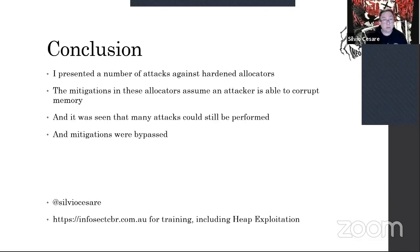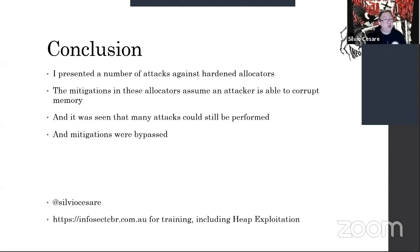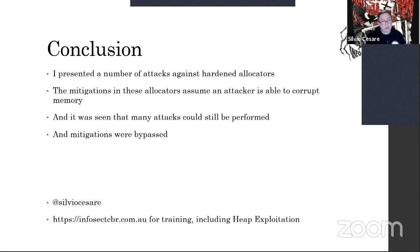In summary, I've presented a number of attacks against hardened allocators. The mitigations all assume an attacker can already corrupt memory — the question is what they can further do and whether allocator defences can be bypassed. It turns out we can actually attack and bypass mitigations in several hardened allocators. My Twitter handle is there; I also do training at InfoSec — courses on code review and heap exploitation. Check out the website or ask questions in the Slack.